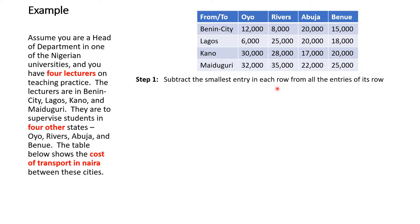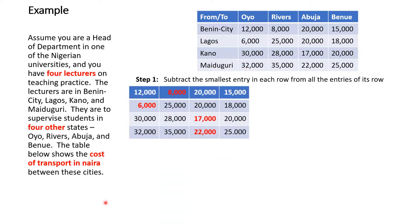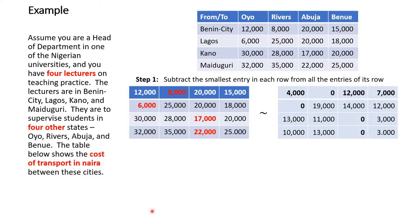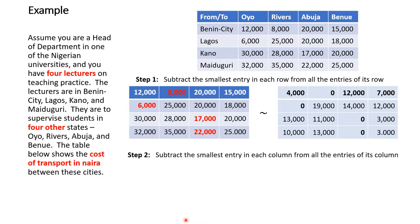Step one: subtract the smallest entry in each row from all entries of that row. In the first row, 8,000 is the smallest. In the second row, 6,000 is the smallest. In the third row, 17,000 is the smallest. In the last row, 22,000 is the smallest. Subtracting these values row by row gives the reduced matrix.